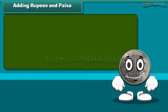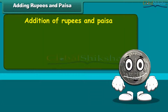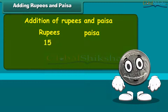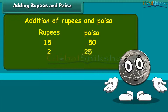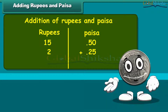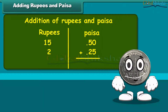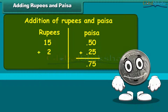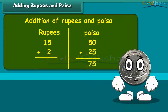Let us learn addition of rupees and paisa. Add 15 rupees 50 paisa and 2 rupees 25 paisa. Write the amount in two separate columns of rupees and paisa. First, add numbers in the paisa column. 50 plus 25 paisa is equal to 75 paisa. Now add numbers in the rupees column. 15 plus 2 is 17.